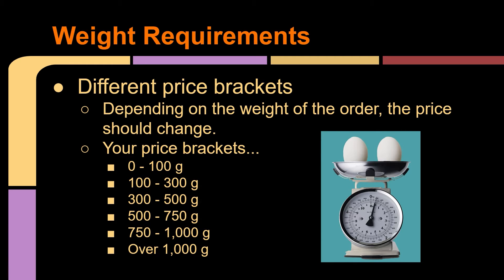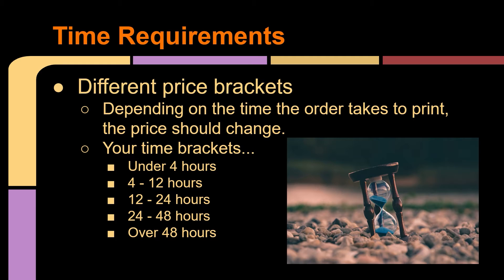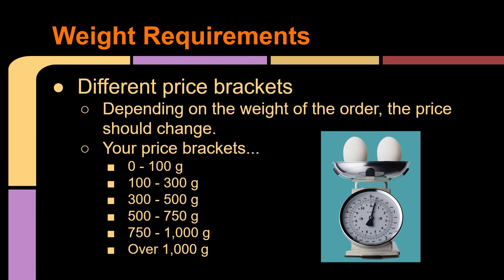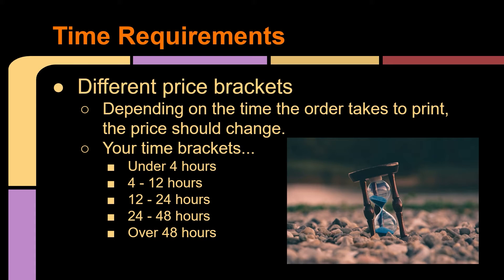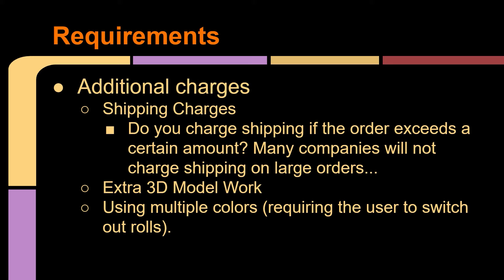You may have an order that only weighs 0 to 100 grams but for some reason takes over four hours to complete. If it's taking additional time, that's time you could have been spending printing someone else's order — so your time has value there. Conversely, you could have something in the 500 to 750 gram range that only takes about 12 hours to print. There are additional charges to take into account as well. For shipping: do you charge shipping if the order exceeds a certain amount? Many companies won't charge shipping on large orders, so maybe an order already costing the customer $60 doesn't need an additional shipping charge.